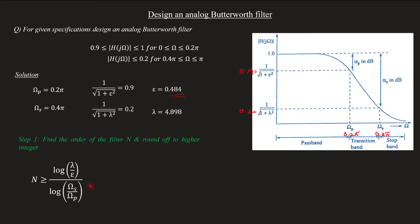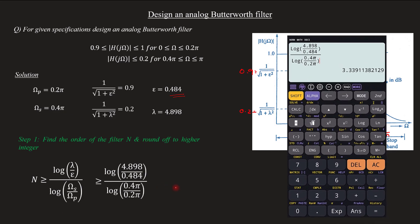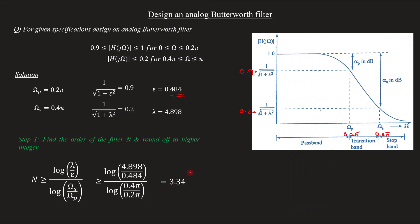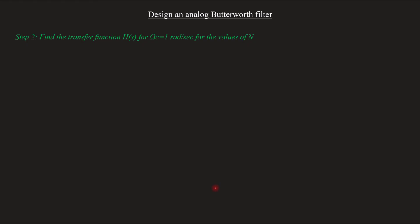We can use this equation, substituting the values of λ, epsilon, Ωs, and Ωp to calculate the filter order. The next step is to find the transfer function H(s) for Ωs equal to 1 radian per second.